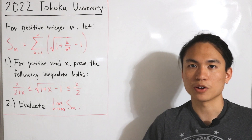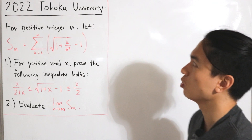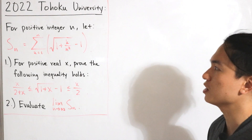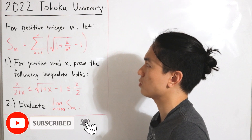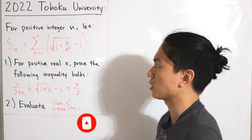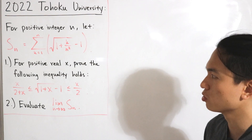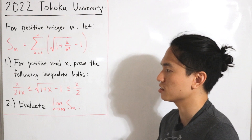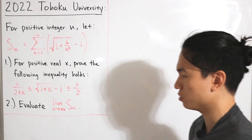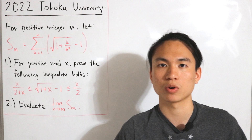Welcome back to another video. Here we have a question from the 2022 Tohoku University college exam. For positive integer n, let S(n) equal the partial sum from k=1 to n of the square root of (1 + k/n²) minus 1. We have two things to answer: for positive real x, prove the inequality x/(2+x) ≤ √(1+x) - 1 ≤ x/2, and evaluate the limit as n approaches infinity of S(n).